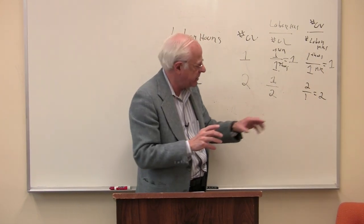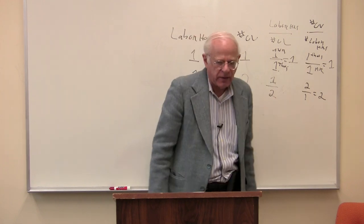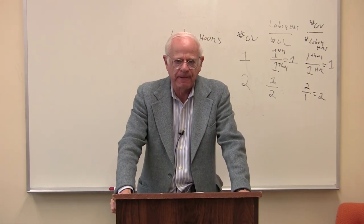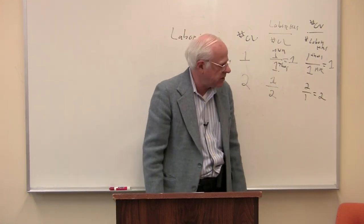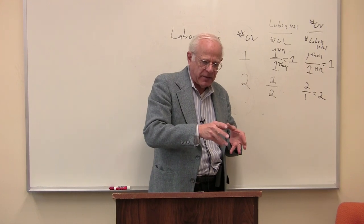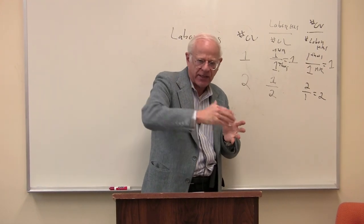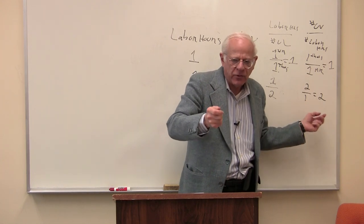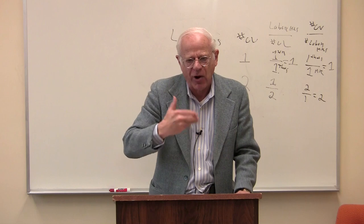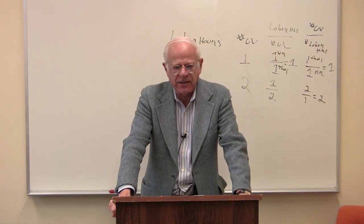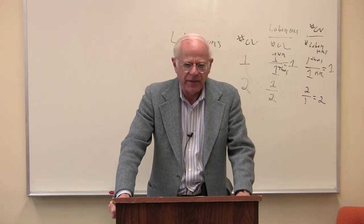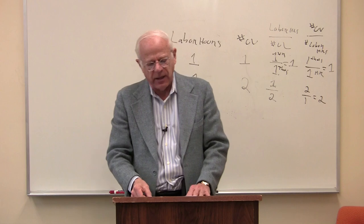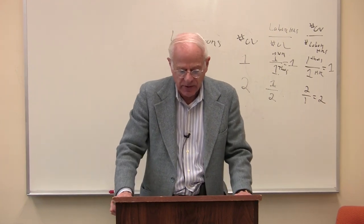Marx is going to argue that this rise in productivity — or this fall in the quantum of social labor to produce something — is tied to, is connected to, the business cycle. He's going to make an argument that the ups and downs of a business cycle, the possibility of a recession like the last three years in the United States, is connected to a rise in the productivity of labor. So this is a contradiction — an ironic twist on capitalism. On the one hand, capitalism gives us a steady rise in productivity, which is wonderful. On the other hand, it gives us something terrible: the possibility of a business cycle.